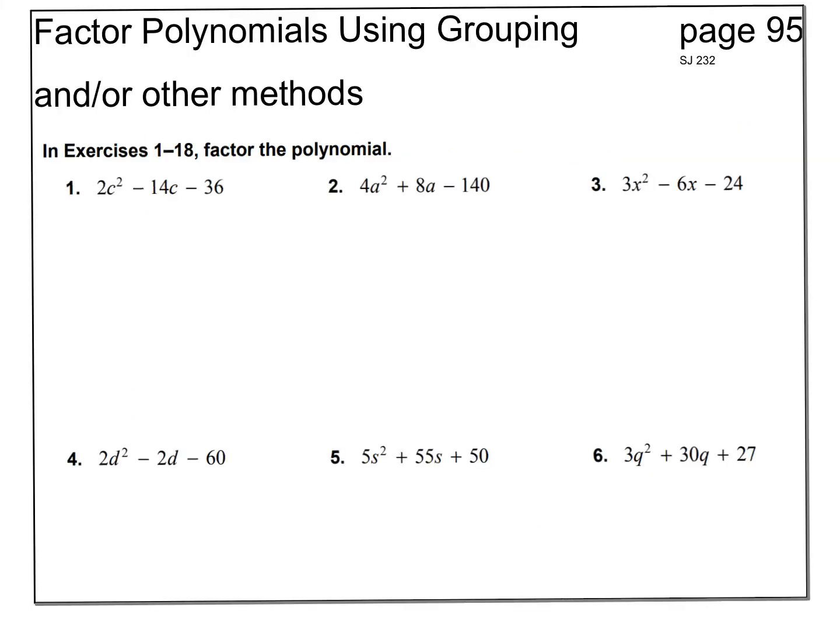Last week in class we were discussing factoring, and oftentimes you may have a greatest common factor. As I look at problems 1 through 6, I notice that every one of these does have a common factor. Let's start with number 1. When I look at 2c² minus 14c minus 36, I see that they're all divisible by 2, so I'm going to divide them all by 2.